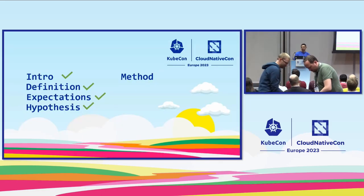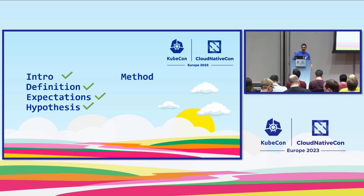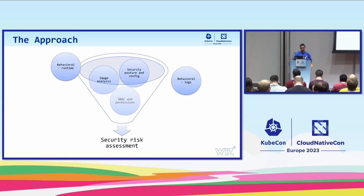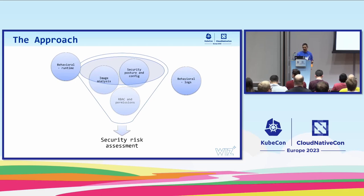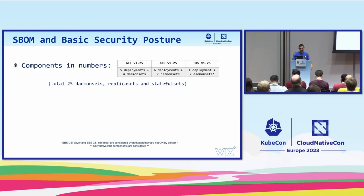What do we need to do to confirm or disprove the hypothesis? We need a method. We performed RBAC and permissions analysis, image analysis, security posture config, behavioral runtime and logs, et cetera. Out of it, we received a security risk assessment.